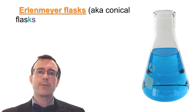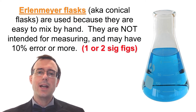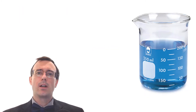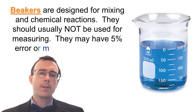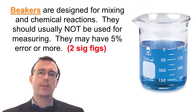There are a lot of things around the lab to measure volumes of liquids, but we shouldn't use all of them. The Erlenmeyer flask, also known as a conical flask, is used because it's easy to mix by hand — it should not be used for measuring volumes. If you do use it, you'll have 10% error or more, meaning only one or two significant figures. Beakers are designed for mixing and chemical reactions and also should not be used for measuring volumes, typically giving 5% error or more — no more than two significant figures.